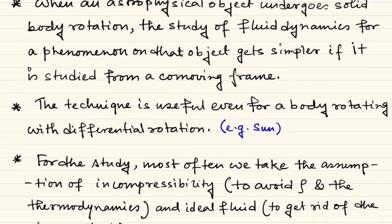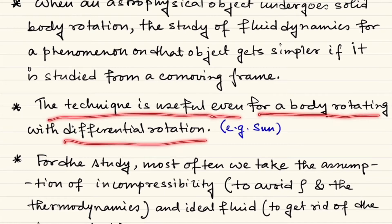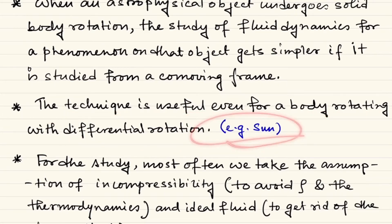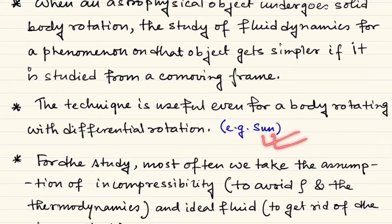This technique is also useful even when the body is rotating with differential rotation — for example, the Sun. It need not move with a constant angular speed, but if the system is moving with differential rotation, we can just choose a reference frame moving with the average angular velocity of the system. That can also simplify the problem enormously.